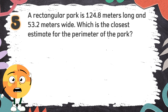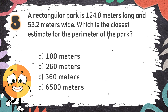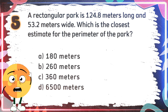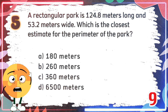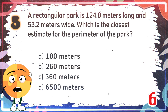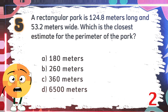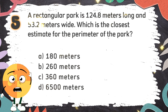Number 5: A rectangular park is 124.8 meters long and 53.2 meters wide. Which is the closest estimate for the perimeter of the park? Again, a rectangular park is 124.8 meters long and 53.2 meters wide. Which is the closest estimate for the perimeter of the park? The choices are: A. 180 meters, B. 260 meters, C. 360 meters, D. 6,500 meters. The correct answer is C. 360 meters.